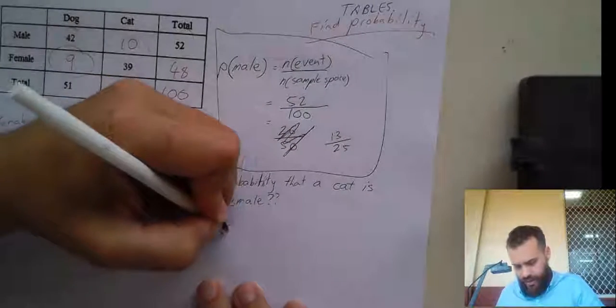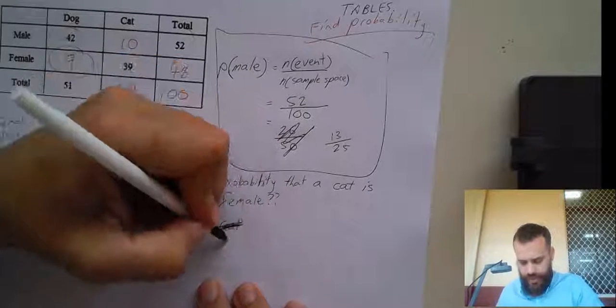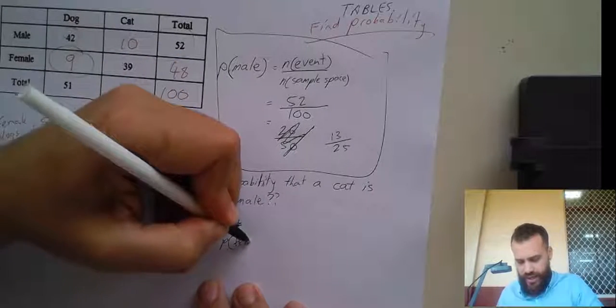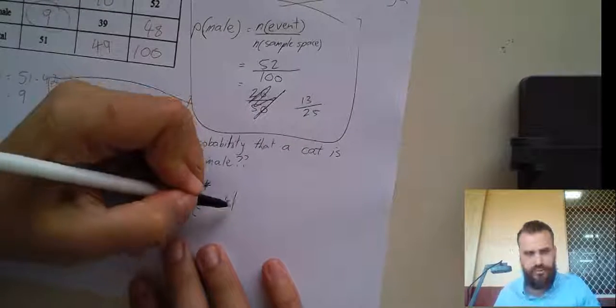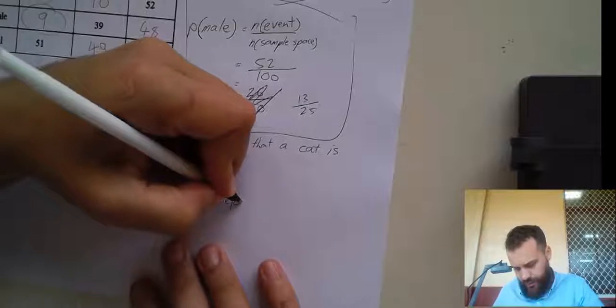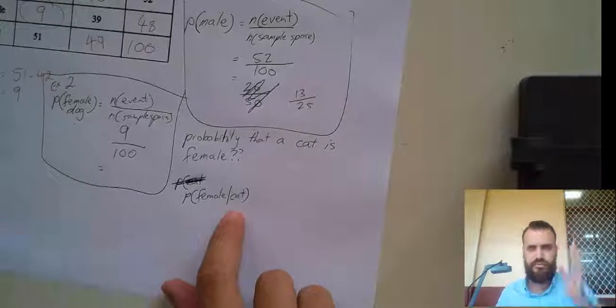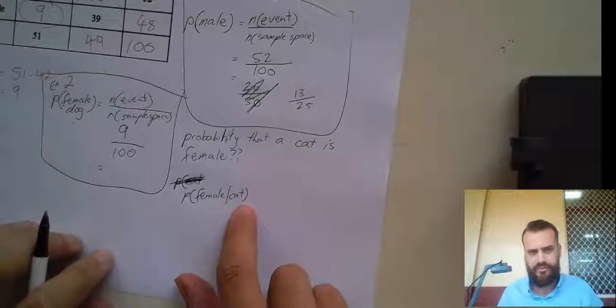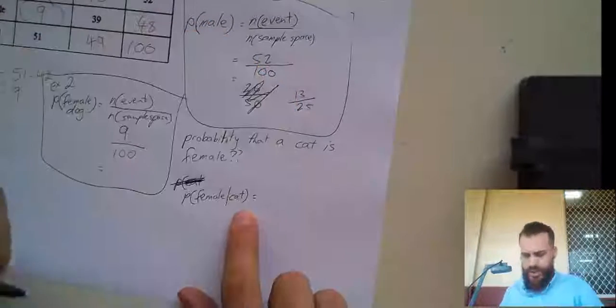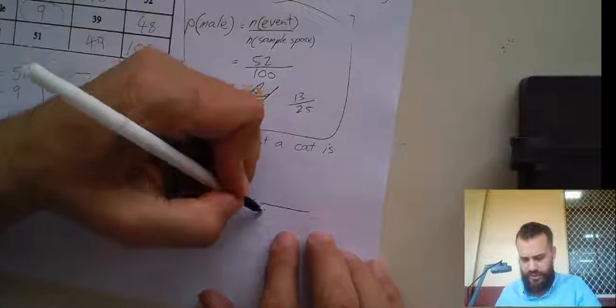Okay, so you can write this like this. The probability that the cat, sorry, the probability that it's female given, that's a straight line up and down, given that it's a cat. Okay, a female given that it's a cat. Now, that's equal to the number of different, sorry, let's do the sample space first.